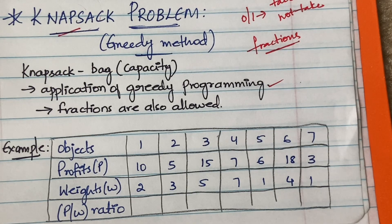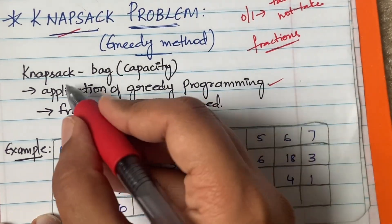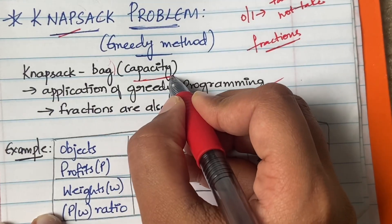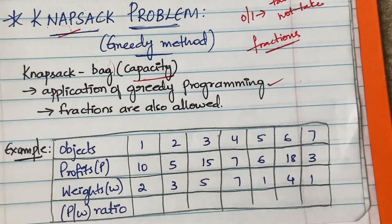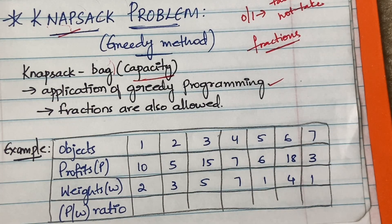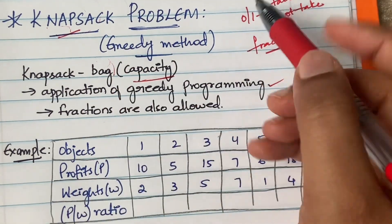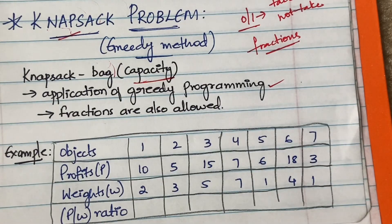You have to pack your bag in such a way that you get maximum profit — deciding which items to pick and which to leave. This is an application of greedy programming. Since this is a fractional knapsack problem, fractions are allowed. If you have 2 kg of oranges but can't accommodate all of it, you can take 1 kg or half a kg. In the zero-one knapsack problem, you must take the entire 2 kg or leave it entirely.